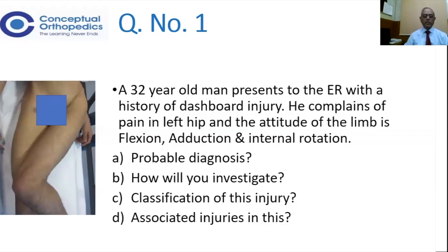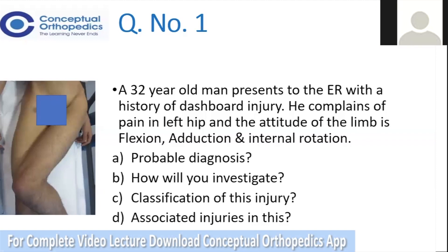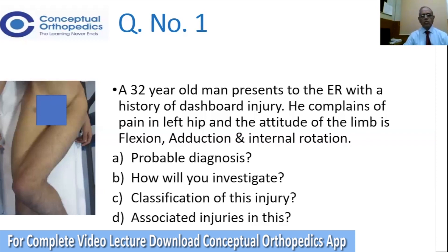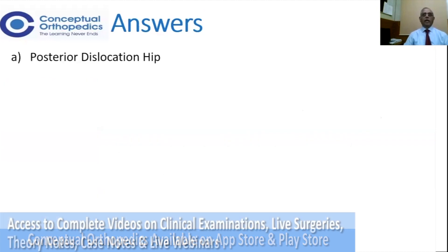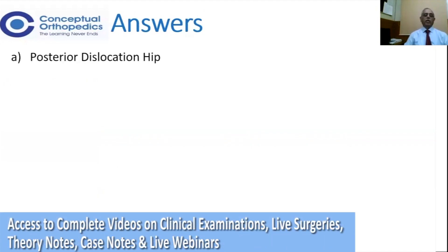What will be the classification and what you will have to know about the associated injuries with this particular injury? Having gone through this, what will be your probable diagnosis? All of you, I hope by now you would have known that it is a classical attitude of a posterior dislocation of the hip joint.